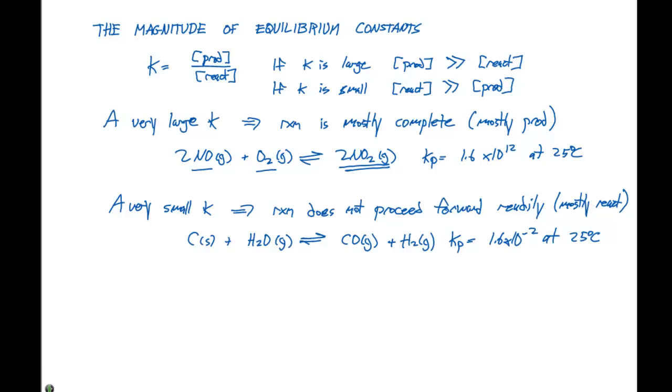The Kp for this particular expression is 1.6 times 10 to the minus 2 at 25 degrees Celsius. So in this particular case, we're going to favor the reactants over the products, because we have a K that's 1.6 times 10 to the minus 2.